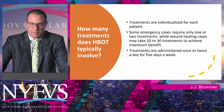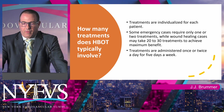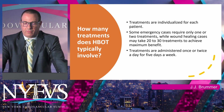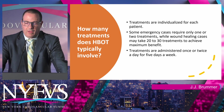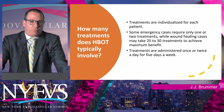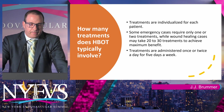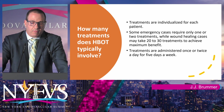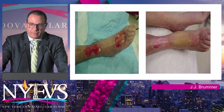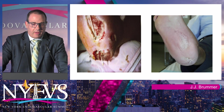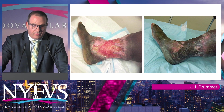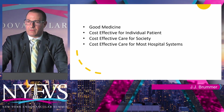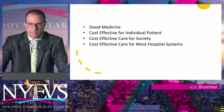How many treatments does HBOT typically involve? Treatments are individualized for each patient. There are some emergency cases like carbon monoxide poisoning where a patient will only require one or two treatments. Wound healing cases generally take between 20 and 30 treatments to achieve maximum benefit, administered once or twice a day for five days a week. Compliance is a big factor. If you're treating in a hospital setting where you have HBOT available, you get a much better level of compliance with your wounds. Great closures with hyperbaric oxygen therapy over a course of about 40 treatments for most patients. It's good medicine — cost effective for the individual patient, for society, and for most hospital systems, especially if they have their own units.